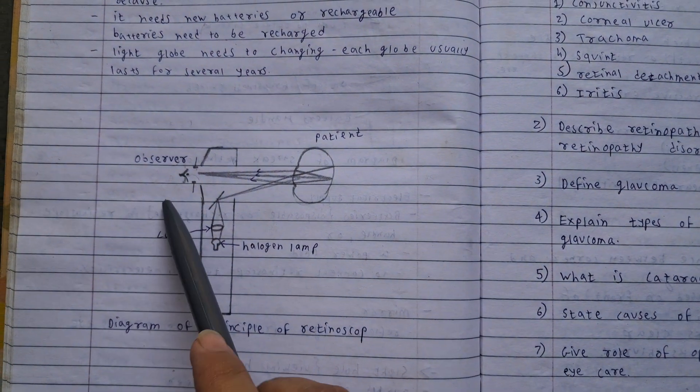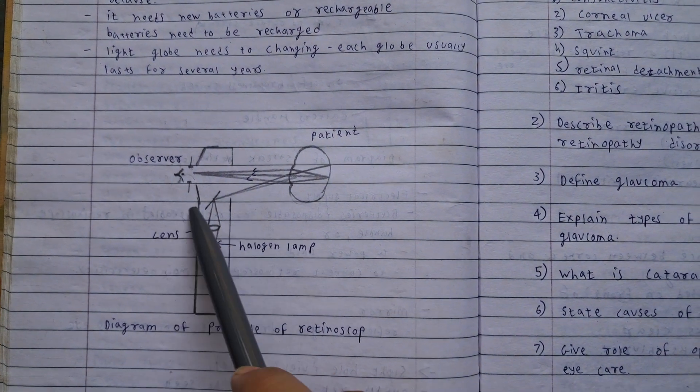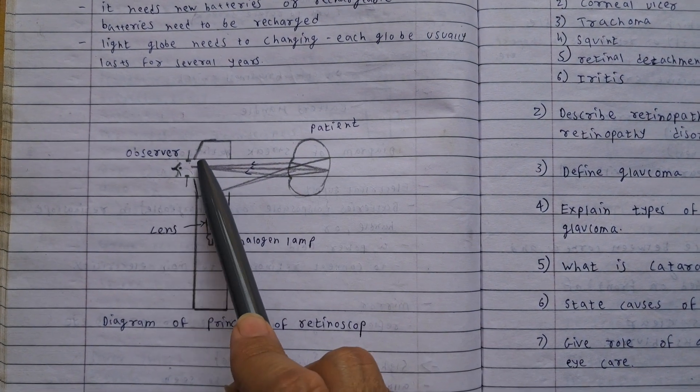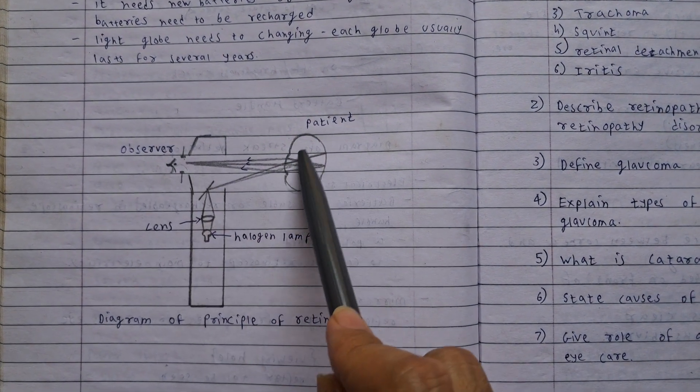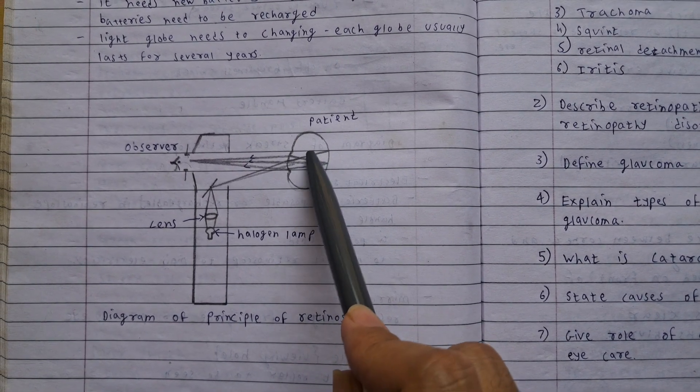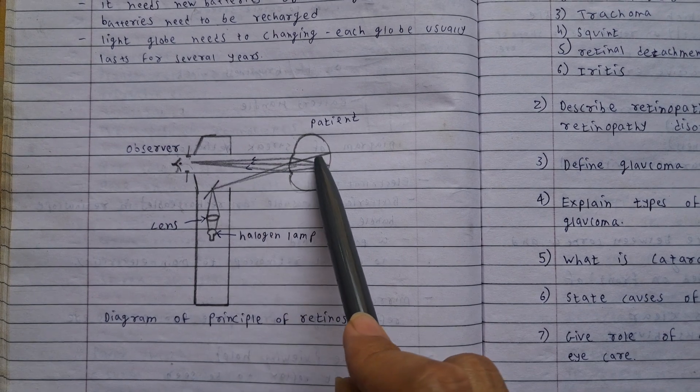So here is observer doctor, here is patient's eye. From here light goes to patient's eye and it is able to see structure behind the eye from this reflective light.